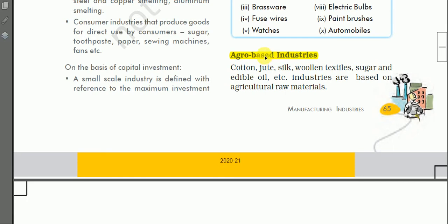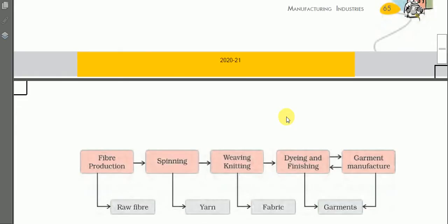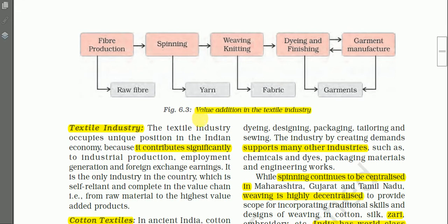Today we shall learn about agro-based industries. Agro-based industries are those that use agricultural products as raw material. Some examples of agro-based industries are cotton, jute, silk, woolen textiles, sugar — that means sugar mills — and edible oils. These are examples of agro-based industries because they are based on agricultural raw materials.